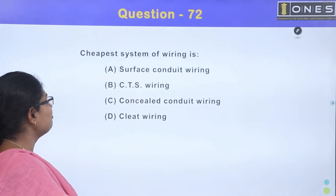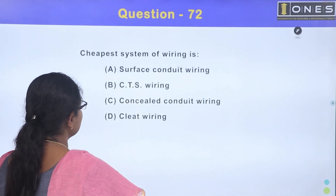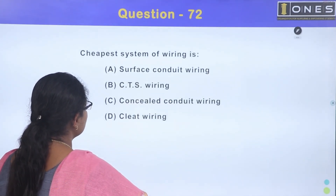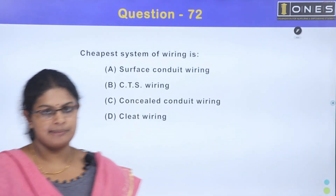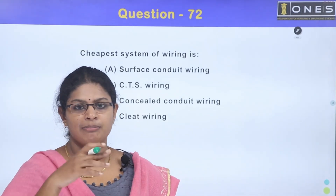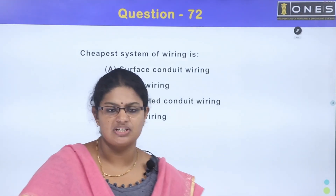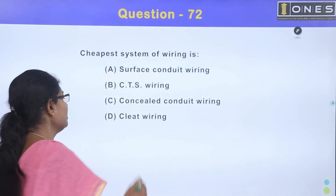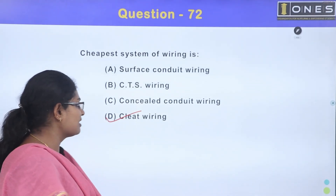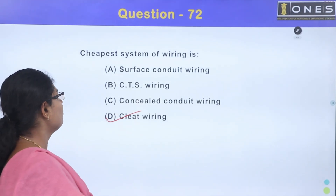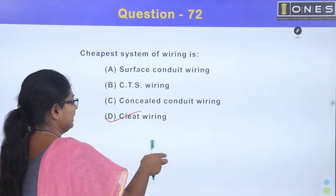Cheaper system of wiring. Option A, Surface Conductor wiring; Option B, CTS wiring; Option C, Concealed Conductor wiring; Option D, Cleat wiring. The answer is Option D, Cleat wiring.